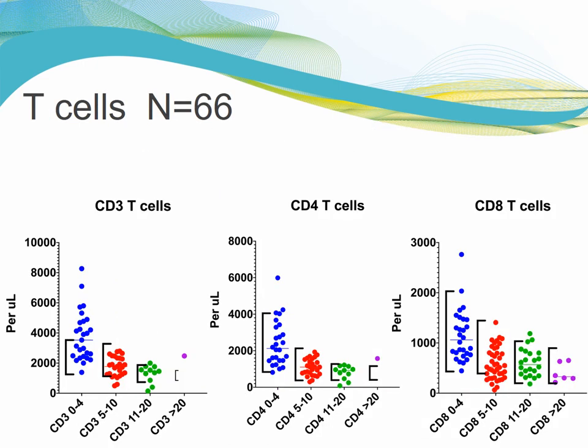T-cells are charged with governance of the immune system and regulation, as well as defense against viral infections. The left-hand panel showing CD3 counts represents total T-cells, and the distribution is maybe a bit high, although certainly some individual patients have low T-cells. When we look at subsets, CD4 cells show nothing out of range. But CD8 cells — critical for defense against viral infections — show low counts, best visible in the 5-to-10-year age bracket, with a significant number of patients having low CD8 T-cells.